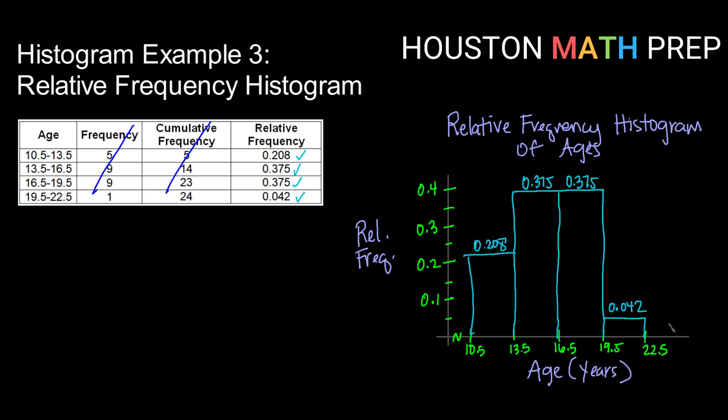Something you might notice about this, you might be thinking, hey, that looks a lot like our very first histogram that we did with just the regular frequencies. And you're absolutely right. Really the only difference is what we chose to label by. It is a different graph, but in general the same shape appears here as did our one with our regular frequency.